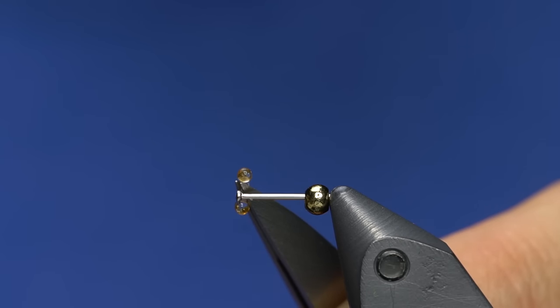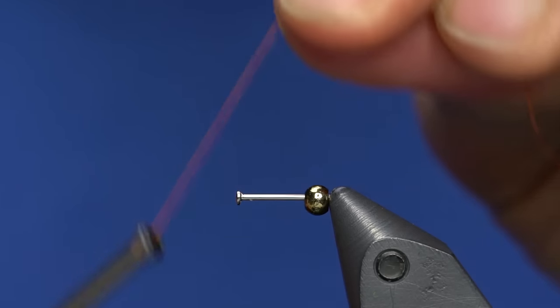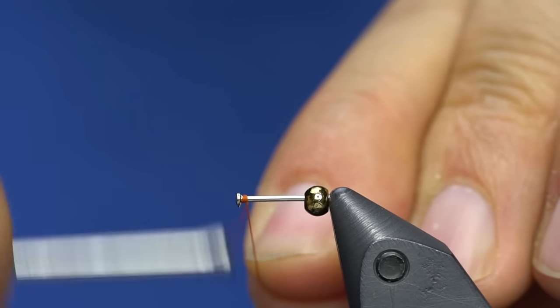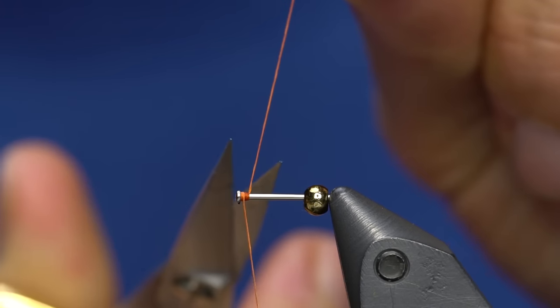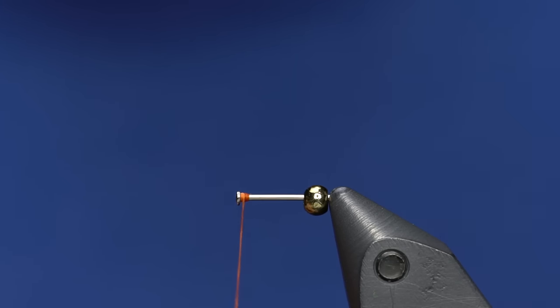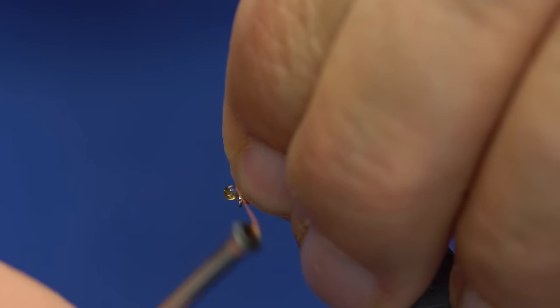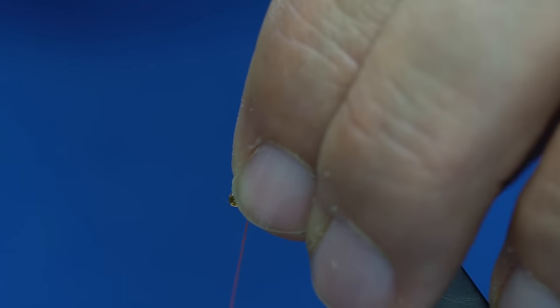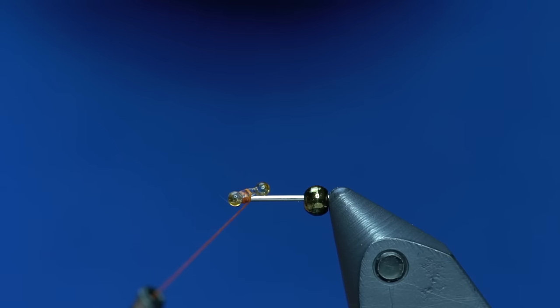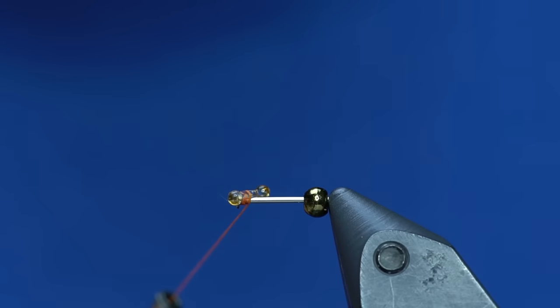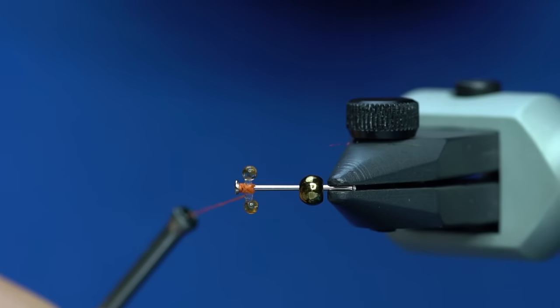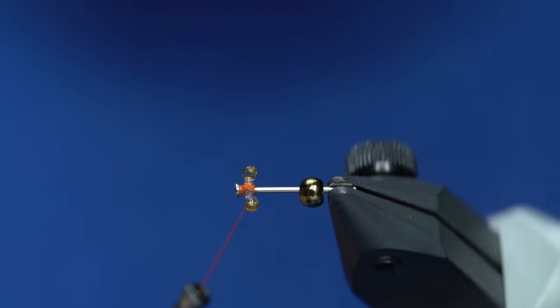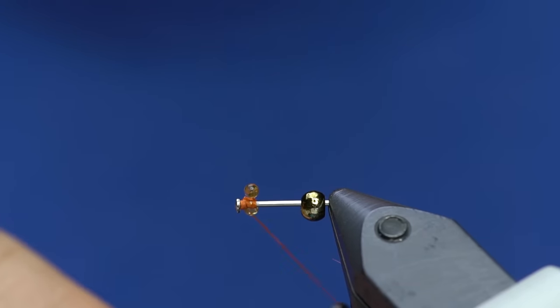You just get a lighter, burn each end, and work it down into a little ball like that. You can make these a bunch at a time. So we just start with the thread on there, and then right at the end we'll position the eyes.